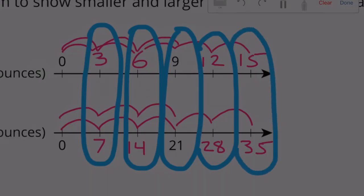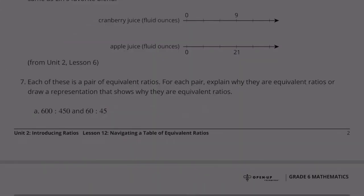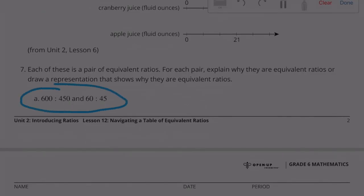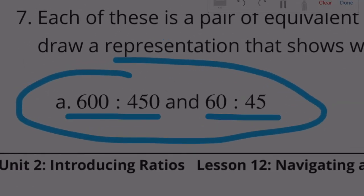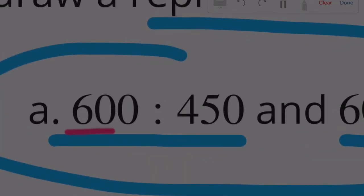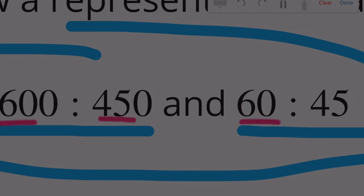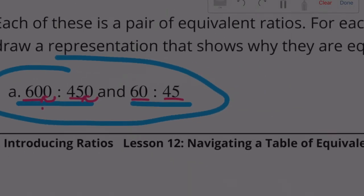Number 7. Each of these is a pair of equivalent ratios. For each pair, explain why they are equivalent ratios or draw a representation that shows why they are equivalent ratios. A: I like this one because it's using the same digits. Really we just made 600 ten times smaller by moving the decimal over, and we made the 450 ten times smaller by moving the decimal over. 60 is exactly ten times smaller than 600, and 45 is exactly ten times smaller than 450.